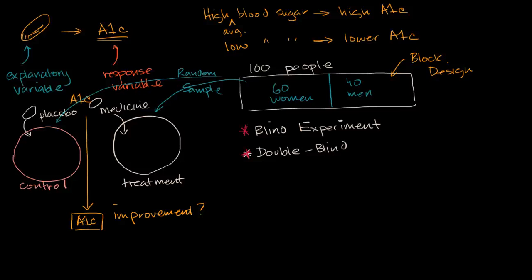In the last video, we constructed an experiment where we had a drug that we thought might help control people's blood sugar. We looked for something that we could measure as an indicator of whether blood sugar is being controlled, and hemoglobin A1c is actually what people measure in a blood test.